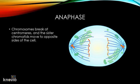Anaphase. During anaphase, the sister chromatids separate and the centromeres divide. The sister chromatids are pulled apart by the shortening of the spindle fibers — remember, in metaphase the spindle fibers were connected to one of the sister chromatids. One sister chromatid moves to one side of the cell, and the other moves to the opposite side. At the end of anaphase, each half of the cell has a complete set of chromosomes.